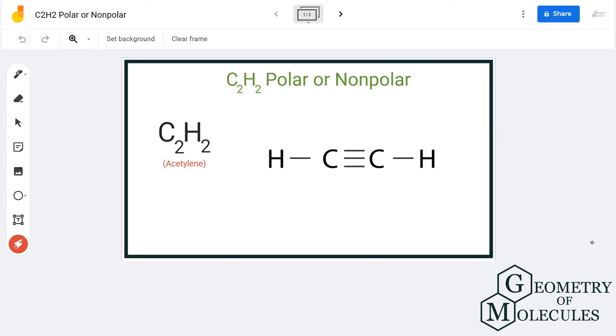C2H2 is made up of two types of atoms: carbon and hydrogen. The carbon atom has an electronegativity value of 2.55 and hydrogen has an electronegativity value of 2.20. So if you calculate the difference, the difference of the electronegativities is almost 0.35.